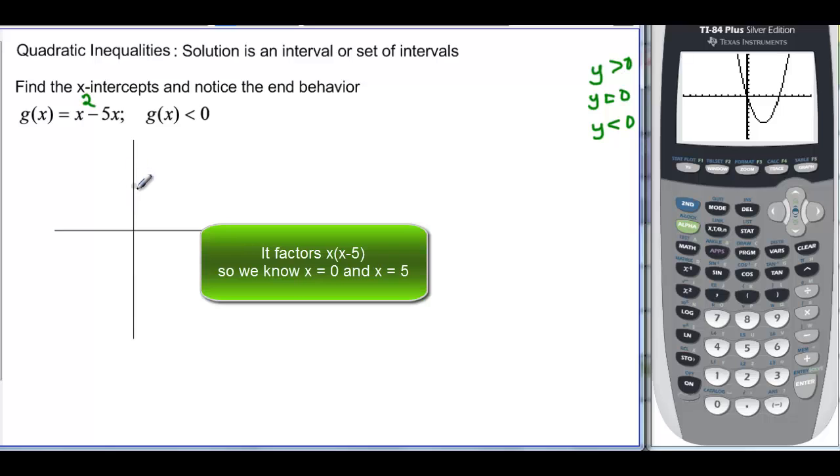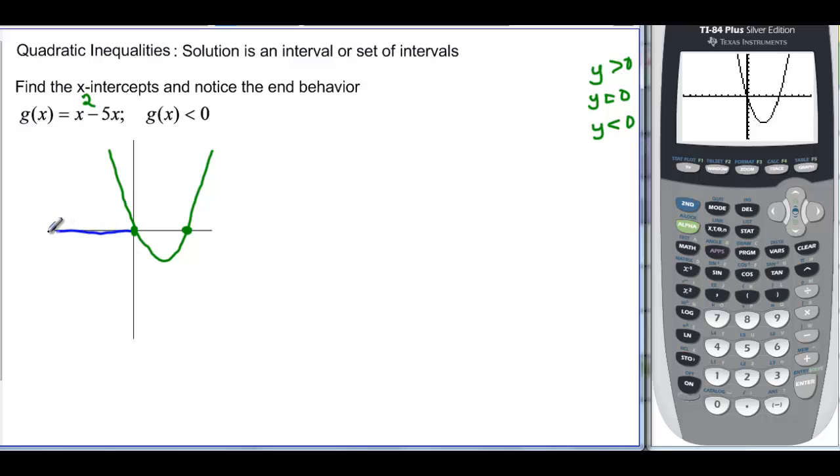So I have my graph and it looks like I have, I know it's going to go through (0,0), looks something like this. Well you can see that this x-intercept right here and this x-intercept right here causes my graph to switch sides of the x-axis. Up here, from here over, my graph is above. And from here over, my graph is above. But in between the two, I have the graph that's below. So I have three sections and the x-intercepts are equal to the boundaries, boundary points.